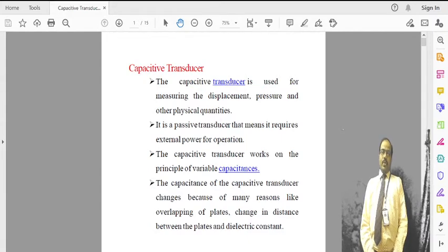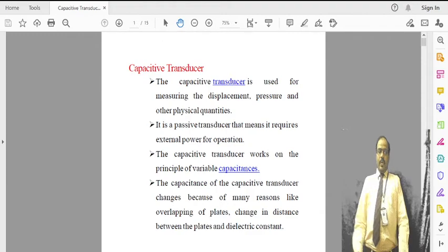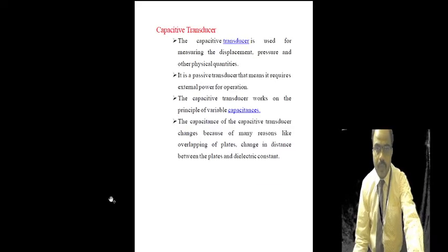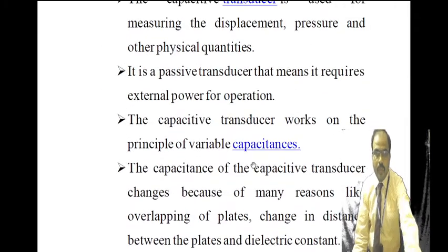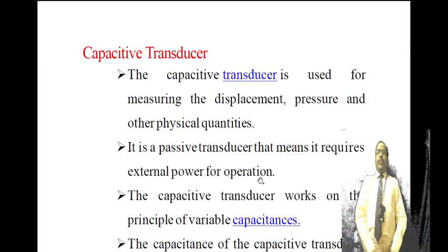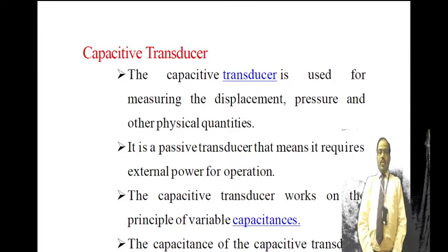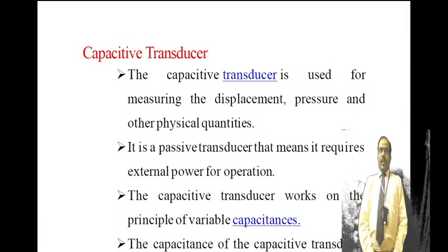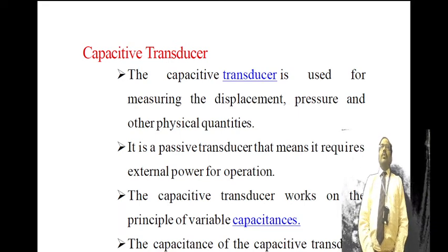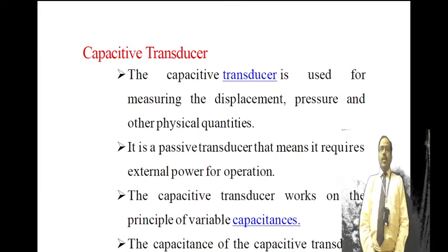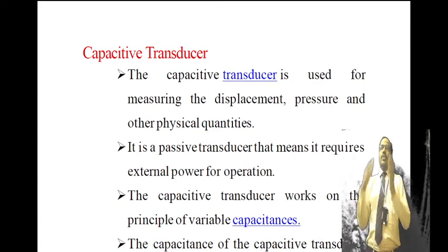Capacitive transducers are also passive transducers, which means they require external power for their operation — similar to resistive and inductive transducers. These capacitive transducers are generally used for measuring displacement, pressure, force, and other physical quantities.